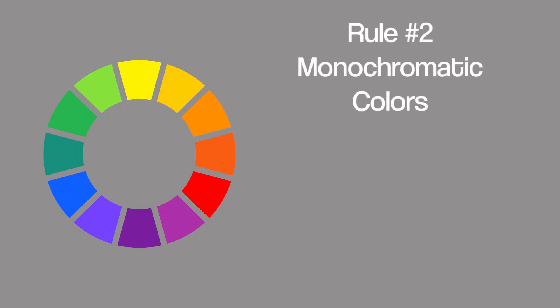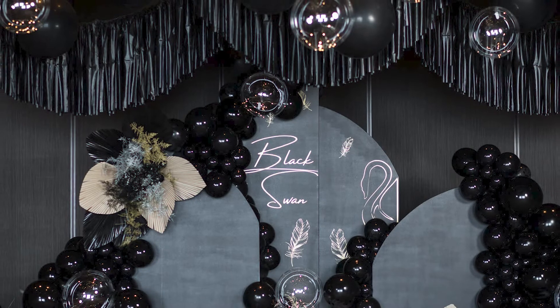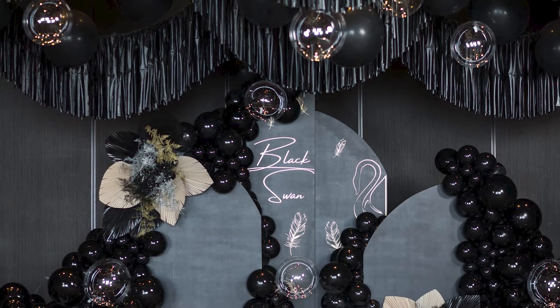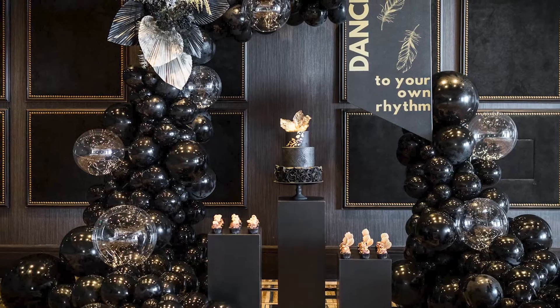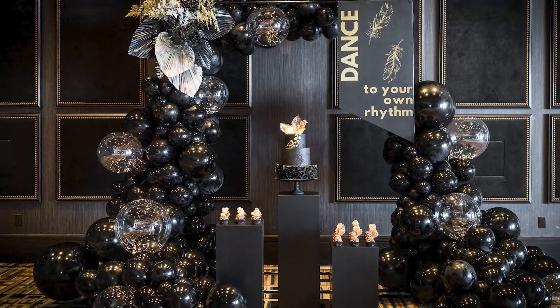Rule number two: monochromatic colors. Monochromatic colors are colors that are all in the same spot on the color wheel. There are two ways that you can use this rule in your displays. The first way would be to use all exact same color balloons, which will create a really bold and dramatic look.